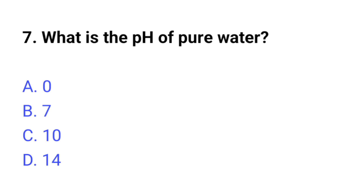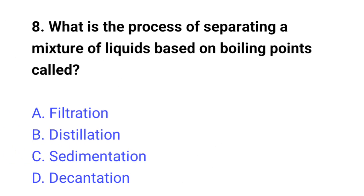Question number seven: what is the pH of pure water? The right answer is option B, seven. Question number eight: what is the process of separating a mixture of liquids based on boiling points called? The right answer is option B, distillation.